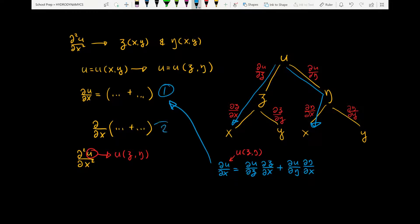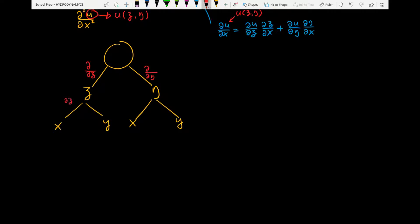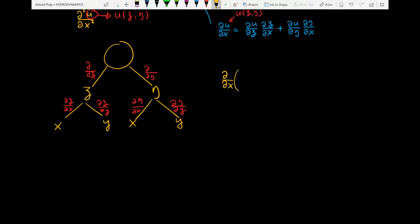Next, we will take the partial derivative with respect to x of this whole expression. Let's redraw the tree diagram of the chain rule in a slightly different way. Instead of function of u, we are going to draw a blank space — a space holder for whatever function we choose to put in there. The rest of the diagram is identical to the one before. We are taking the partial derivative of this whole expression.